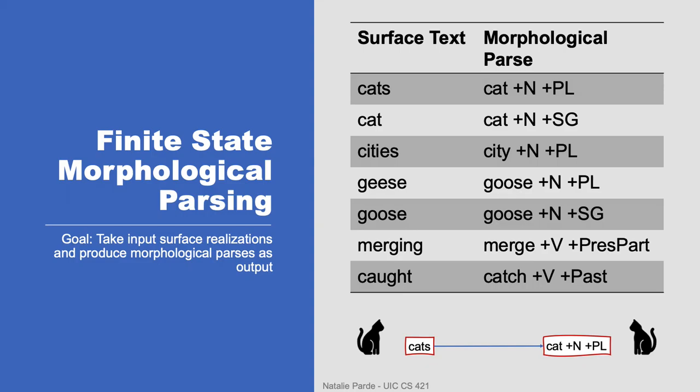So if we were to build a finite state morphological parser, we would basically want it to do something like this: take surface text as input and produce a morphological parse as output, using a bunch of specific grammatical terms that we don't need to cover quite yet.